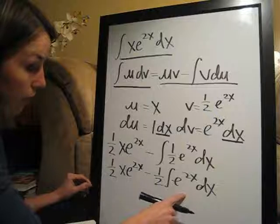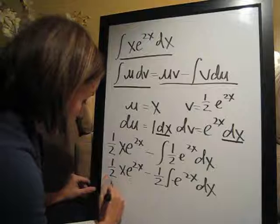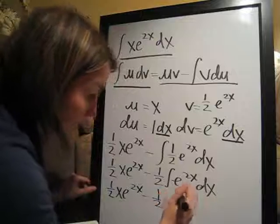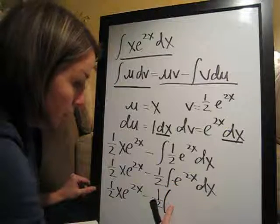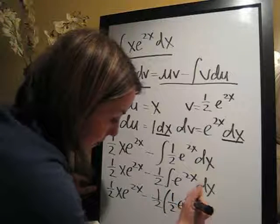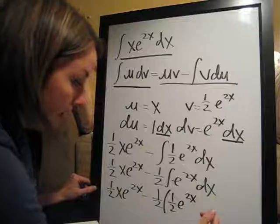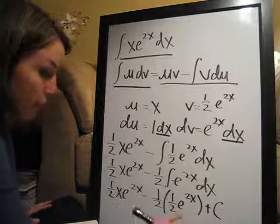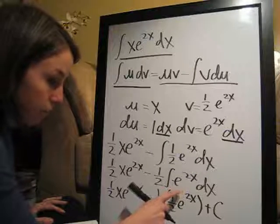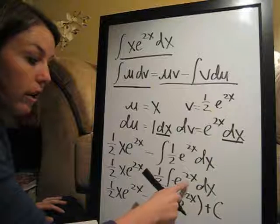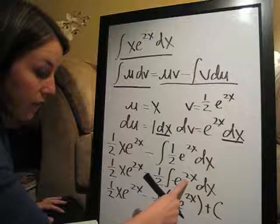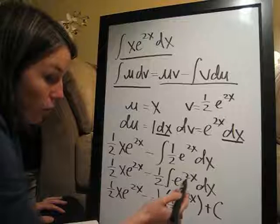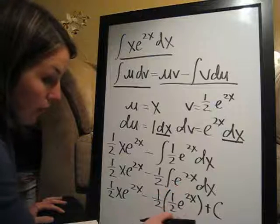The integral of e to the 2x, we're going to do 1 half x e to the 2x minus 1 half, and then here's going to start the integral 1 half e to the 2x, and then plus c, the constant we always add to the end. The integral of e to the x with any coefficient on the x is that same thing, e to the 2x, and then the coefficient becomes 1 over whatever this constant is, so 1 half e to the 2x.